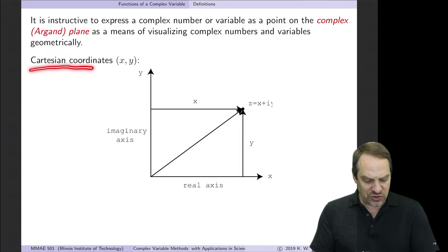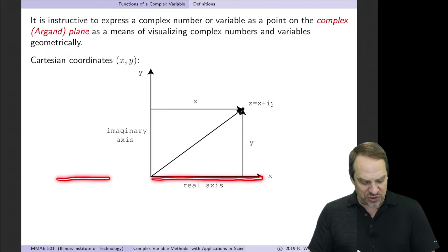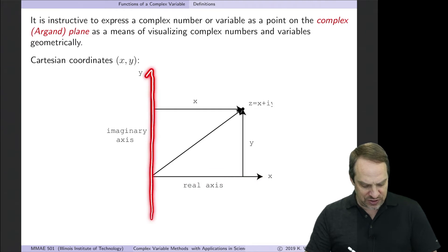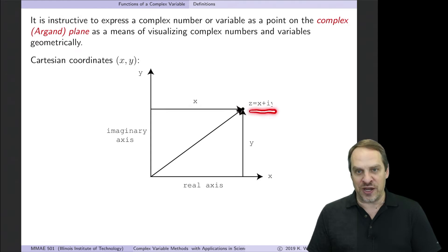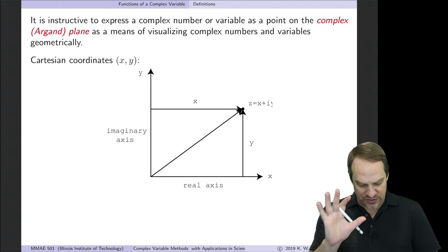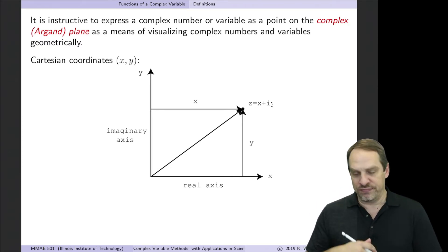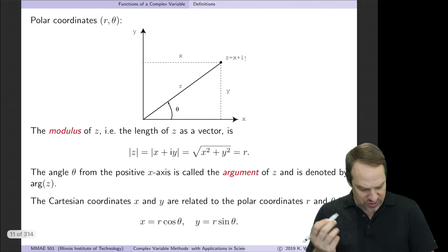We can do it either in Cartesian coordinates, so X and Y, where X is the real axis. So any real number is going to be along the X-axis. And then the Y-axis is the imaginary axis. So a point Z out here, so X plus IY, well, that's a distance X and Y. So that gives us the location of the point in the complex plane and gives us a very clear way to geometrically interpret what a complex number or variable is representing.